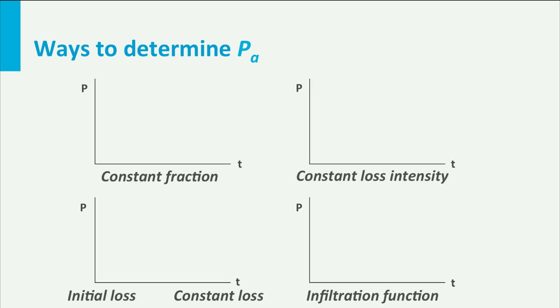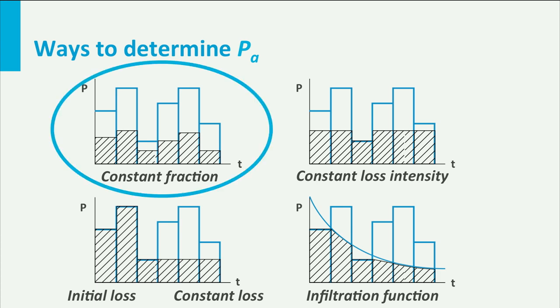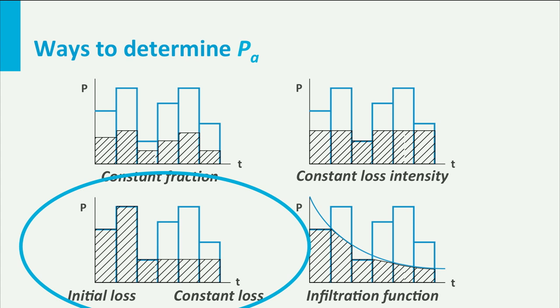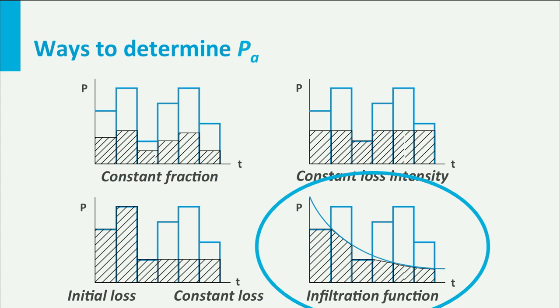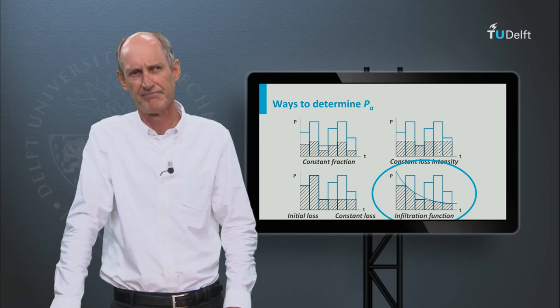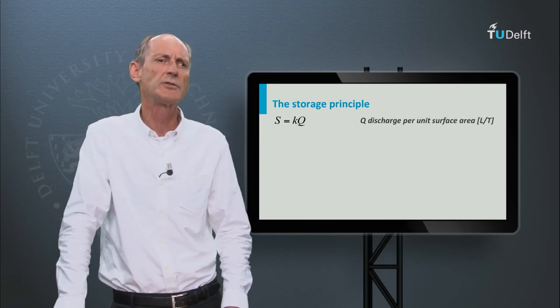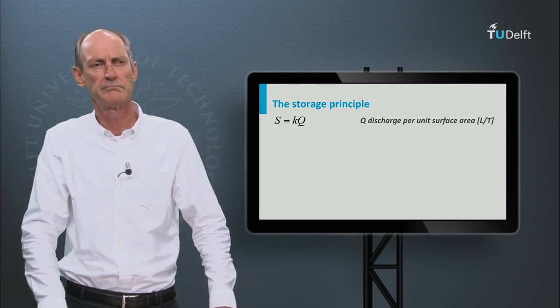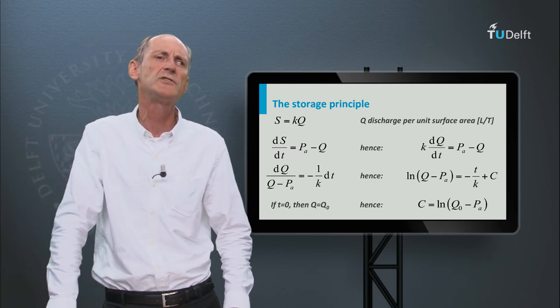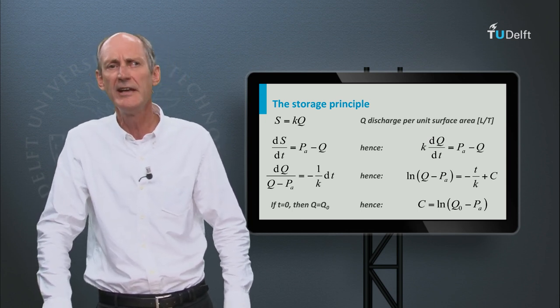So how do we subtract the increase of temporary storage from the precipitation? There are different methods. Some subtract a certain percentage. Some subtract a fixed threshold. Some distinguish between a short-term buffer and a longer-term threshold, and others assume a sort of maximum infiltration capacity. We generally take the fixed threshold for its simplicity. We saw that groundwater depletion can be simulated as a linear reservoir. If groundwater is dominant in a catchment, we could simulate both the fill and the depletion by a linear reservoir.